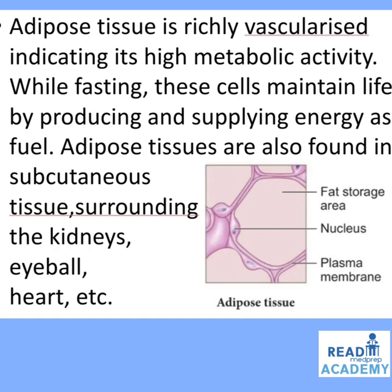Adipose tissues are also found in subcutaneous tissues surrounding the kidneys, eyeball, heart, etc. In the image you can see an enlarged adipocyte cell, which has a fat storage area, and the cytoplasm is pushed towards the periphery near the plasma membrane, with a nucleus at the periphery.